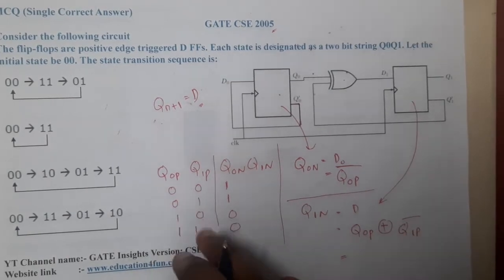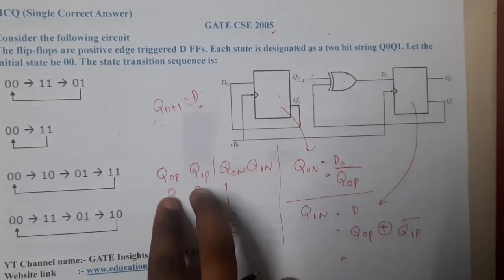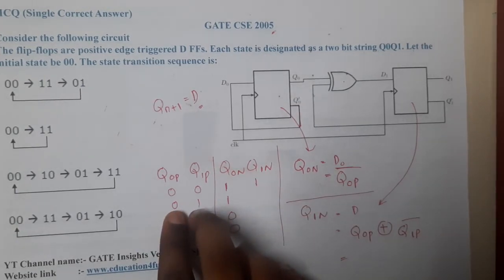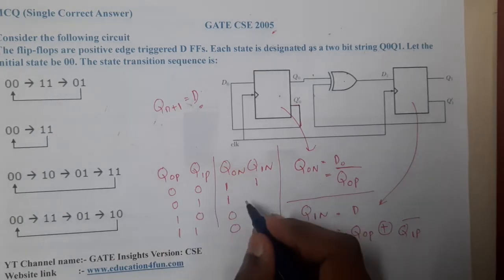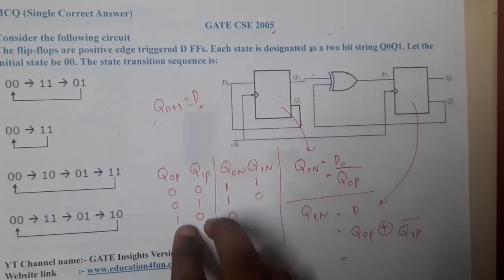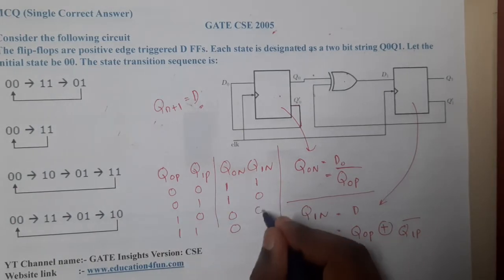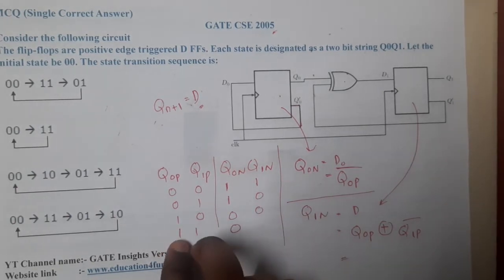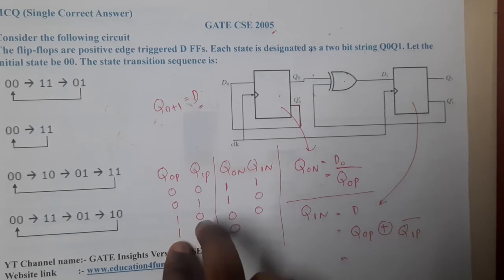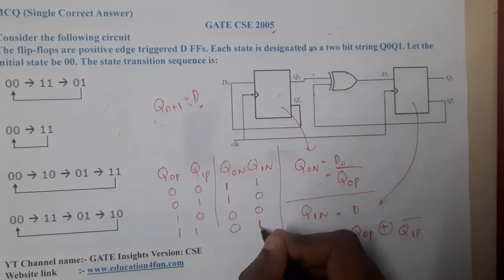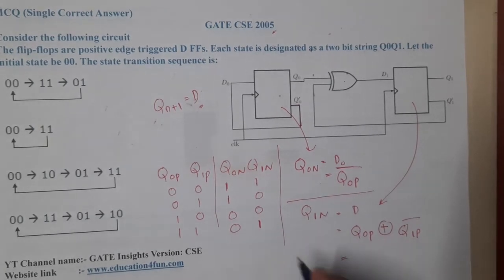If you solve this here, it is nothing but 0 XOR 1, which is 1. Similarly, 0 XOR 0 is 0. Similarly, 1 XOR 1 is 0. Similarly, 1 XOR 0 is 1. So we got this as a result.